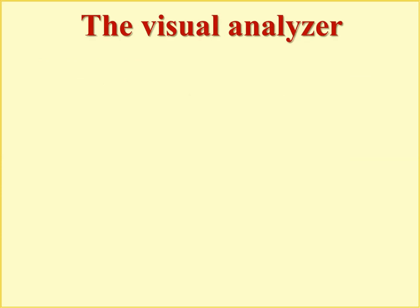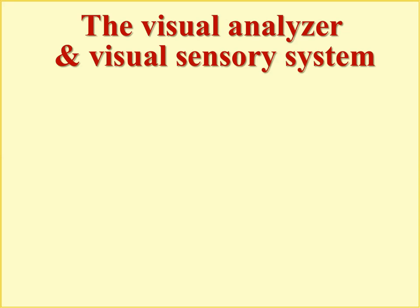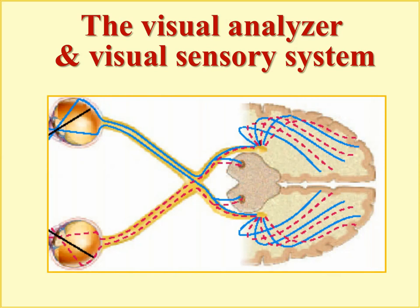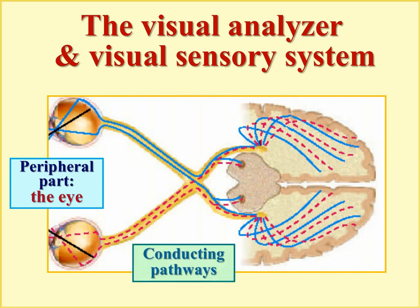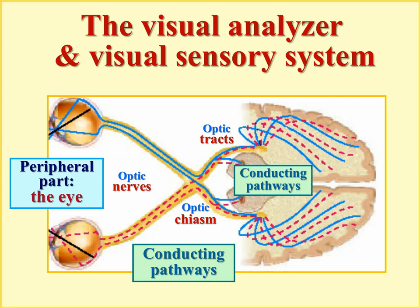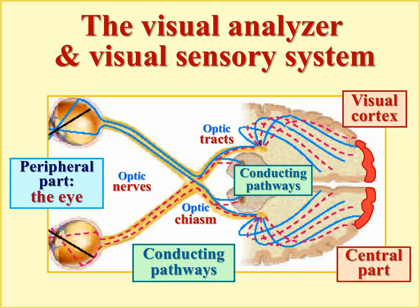The visual analyzer has a well-known general structure. The peripheral part is the eye, where receptors — rods and cones — are located in the retina. Conducting pathways include optic nerves, optic chiasm, and optic tracts continuing to midbrain and thalamic structures such as the quadrigeminal plate and lateral geniculate bodies. Finally, optic radiations lead to the central part — the visual cortex — located in the occipital brain portion.